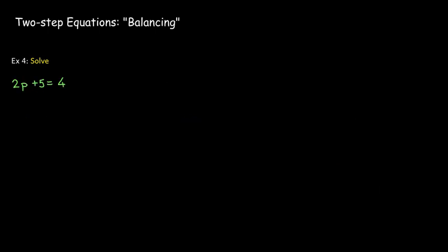Now we use the idea of balancing — adding or subtracting the same thing from each side. In these two-step examples, after we balance to get the term with the variable by itself, we then do a division. In the first example, I start by subtracting 5 from each side, and then divide both sides by 2 to get p by itself, giving me the solution p equals negative one-half.